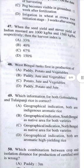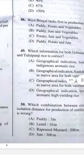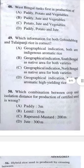Question 49: Which information for both Gobindabhog and Tulaipanji rice is correct? Answer B — geographical indication with South Bengal as the native for both varieties. South Bengal includes Jainagar, where moa is famous.